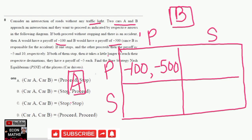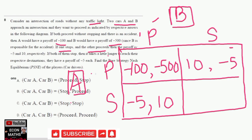If one stops and the other proceeds, the payoff is minus 5 and 10. If Car A stops, its payoff is minus 5 and Car B's payoff is 10. Similarly, if Car B stops, its payoff is minus 5 and Car A's payoff is 10. If both stop, it takes a little longer to reach their destinations and they each have a payoff of minus 5.